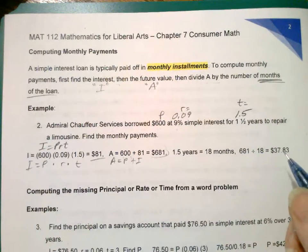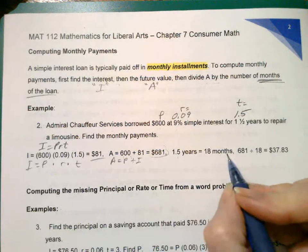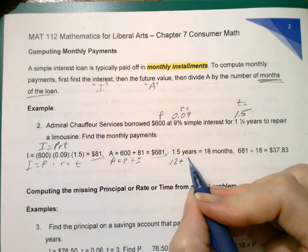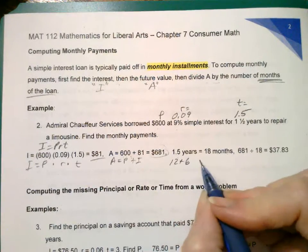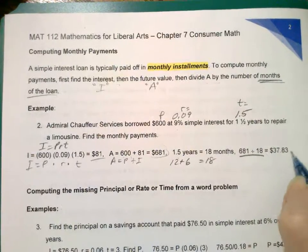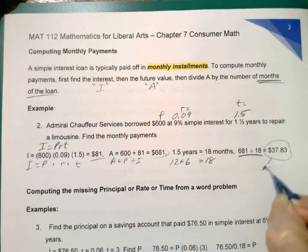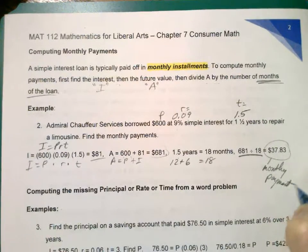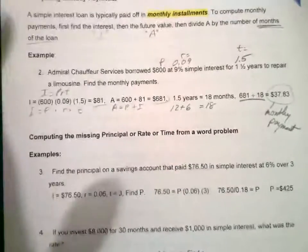And then to find your monthly payments, we're going to convert years to months. So that's 12 plus half of a year is six months. That gives you 18 months. Divide that by 18 and you will get your monthly payment.